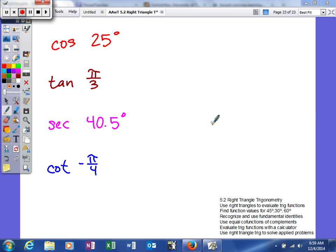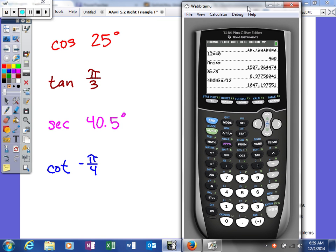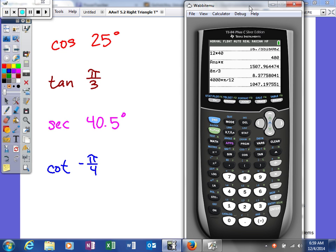But we will need a calculator on things we don't know. Right now we know exact values for 30 degree angles, 45 degree angles, and 60 degree angles. We'll talk about some others later. But for angles like 25 degrees or 40.5, we won't be able to do that. So we're going to learn how to use our calculator to calculate trig functions. A very important process for us.